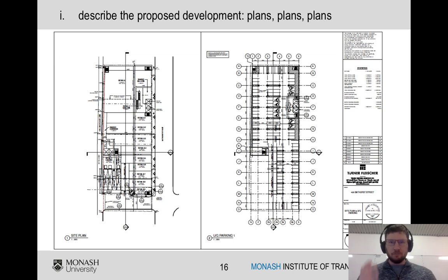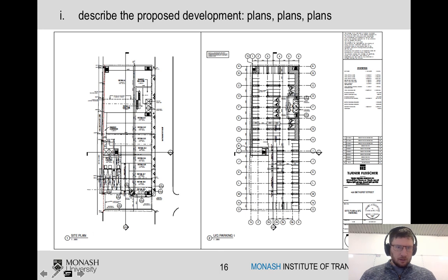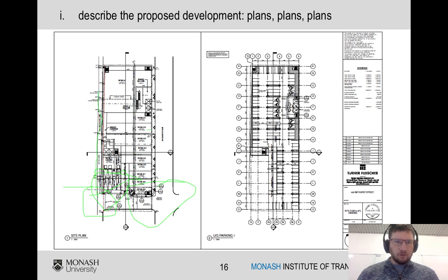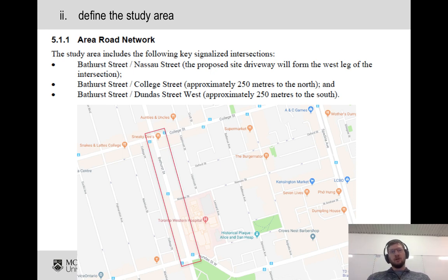Of course you won't be the only technical person working on this — there'll be a team of architects and planners and all sorts of people. Deep in the report in the appendices there are architectural plans: you can see the layout of the parking garage on the right and the ground floor layout on the left, with all the retail areas, a shared corridor, and loading bays on the west side. There's an intersection and access out to a laneway at the back, then a ramp down to underground parking for everyone arriving by car.